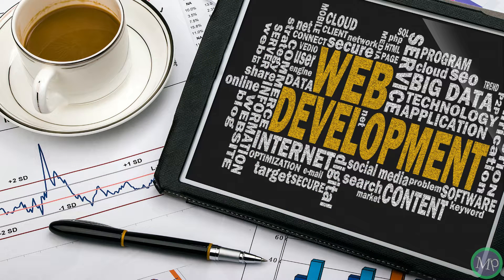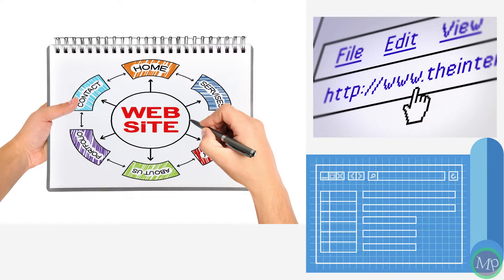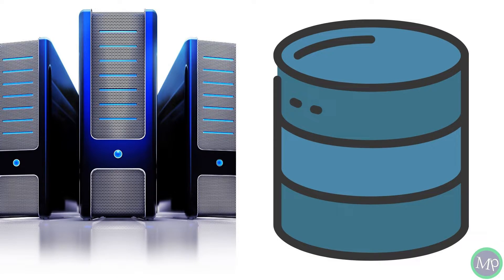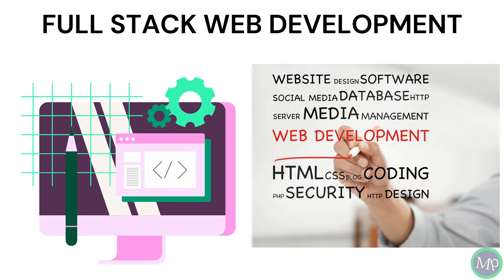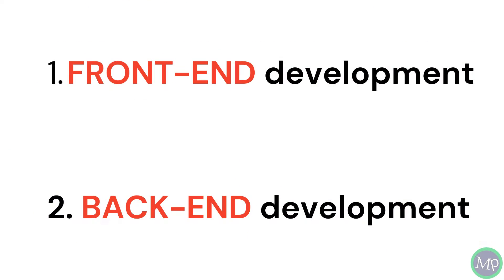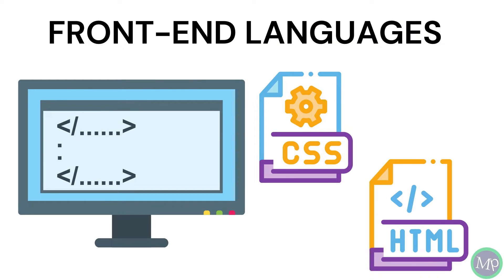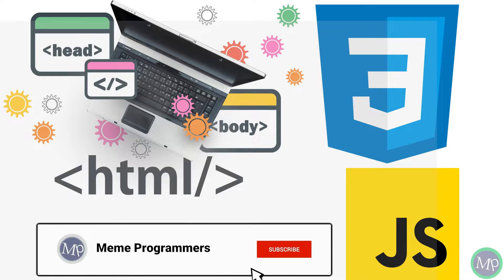Next, web development. What is web development? We will create a real-world site from the blueprint and create a database in this phase. We have two parts: front-end development and back-end development. Front-end languages are HTML, CSS, and JavaScript.